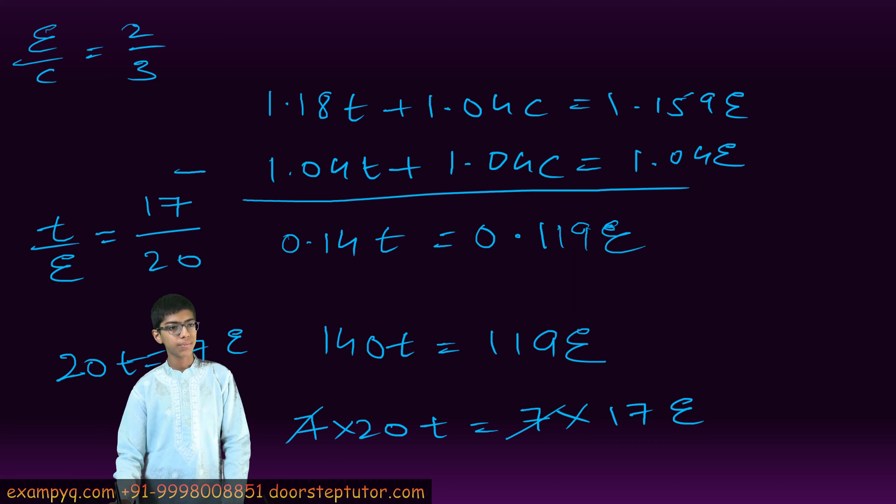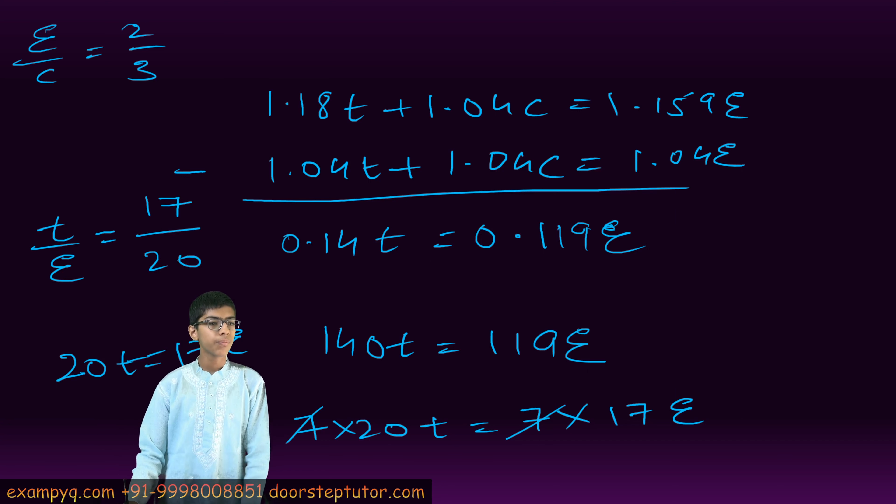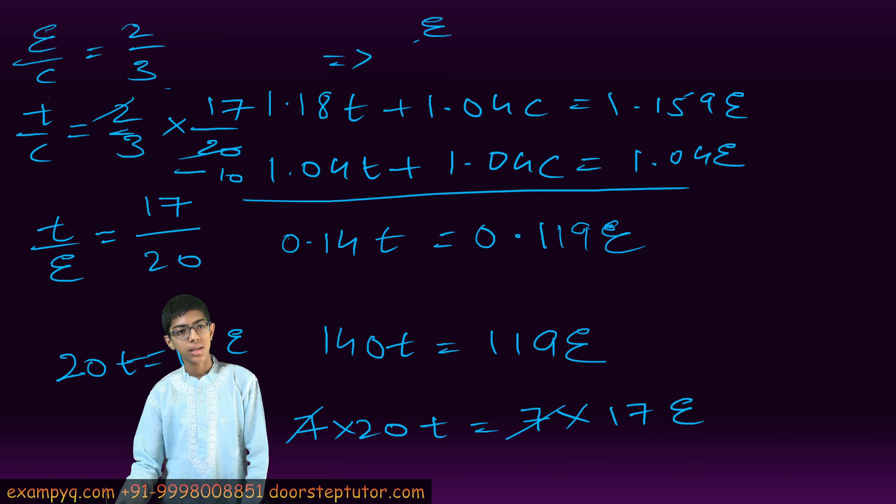We can combine these ratios by cross multiplication. We will multiply these two ratios. So we have T by C equals 2 by 3 into 17 by 20. That is, T by C equals 17 by 30.